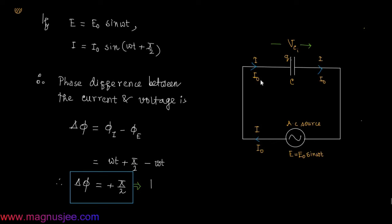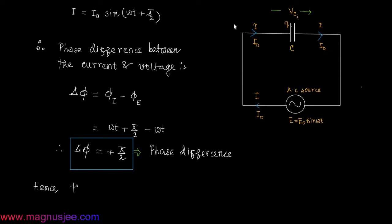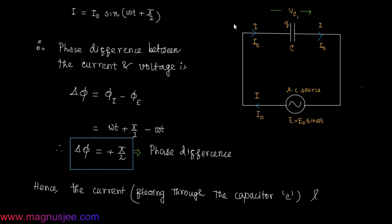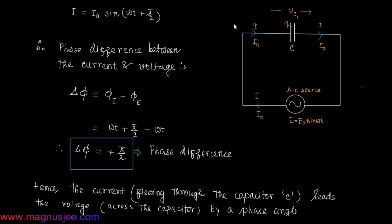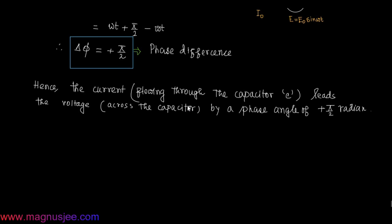Therefore, Δφ = +π/2, which is the phase difference between the current and voltage. Hence, the current flowing through the capacitor of capacitance C leads the voltage across the capacitor C by a phase angle of +π/2 radians.